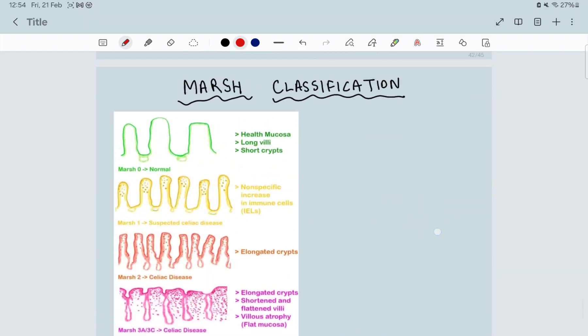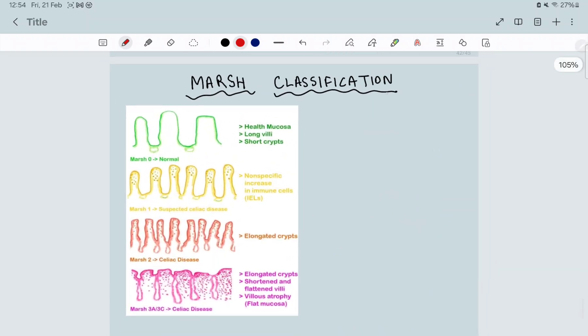And also, I want to discuss about Marsh classification because I think one-liner question can also be asked from this. Marsh classification is used for which disease? It is used for celiac disease. So in Marsh 0 which is normal, you have healthy mucosa, long villi and short crypts.